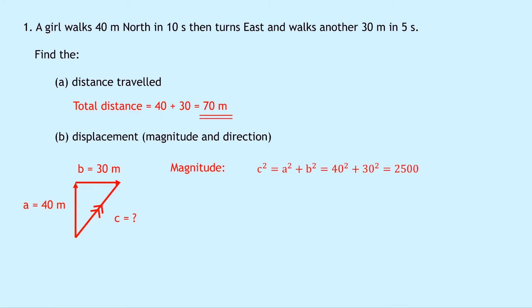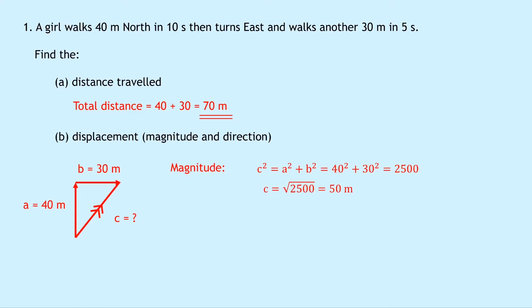So we've got C squared equals A squared plus B squared, which is equal to 40 squared plus 30 squared, which equals 2,500 once you put that into your calculator. But it's not just C squared that we're after — it's C that we want, so we need to square root 2,500, which gives us an answer of 50 metres.